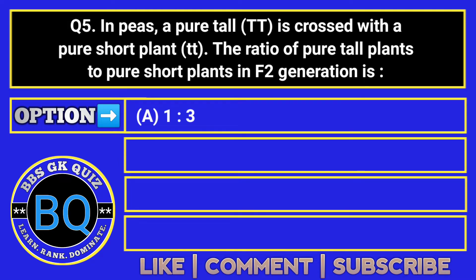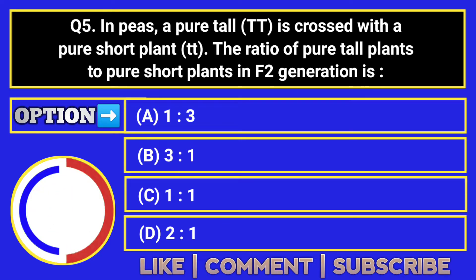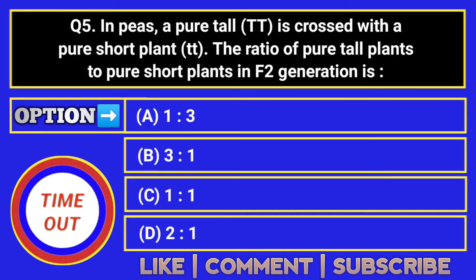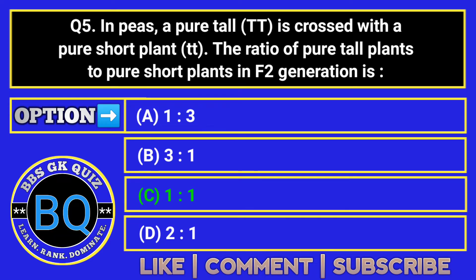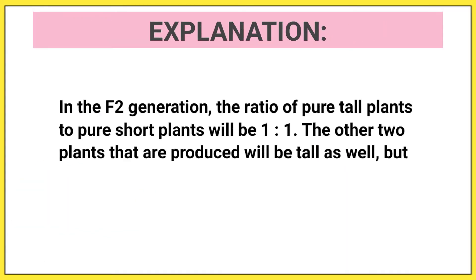In genetics, a pure tall plant is crossed with a pure short plant. The ratio of pure tall plants to pure short plants in the F2 generation is... The correct answer is option C. In the F2 generation, the ratio of pure tall plants to pure short plants will be one to one. The other two plants produced will be tall as well, but will not be pure.